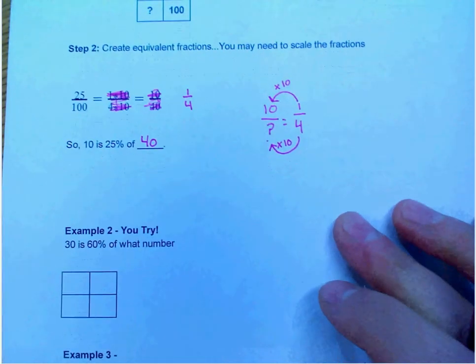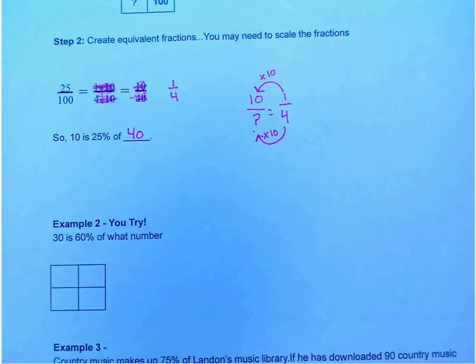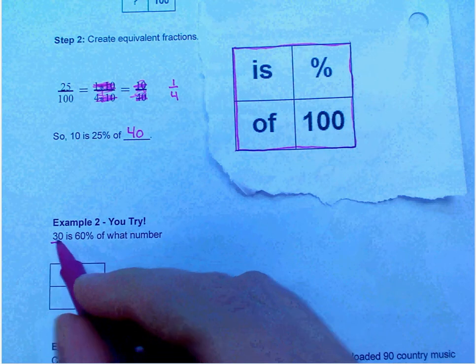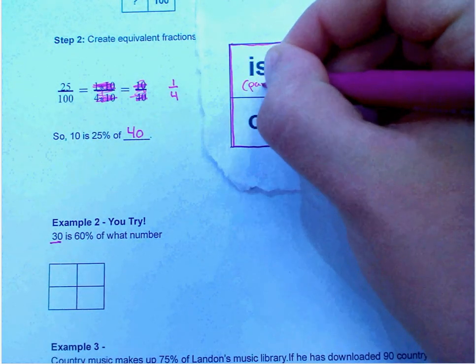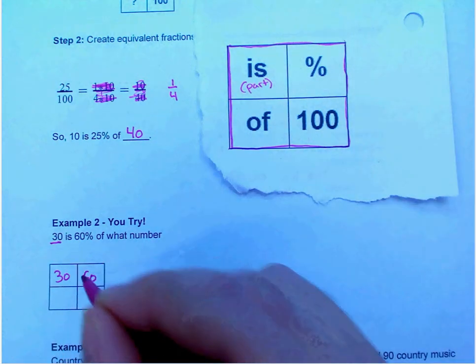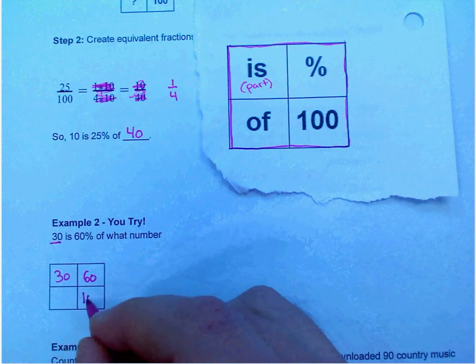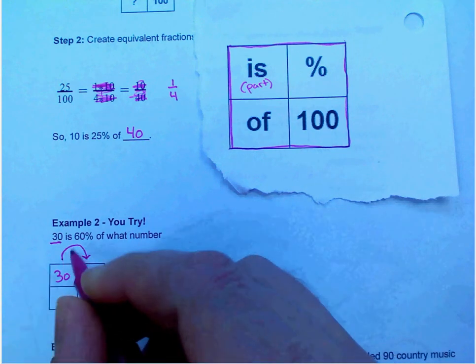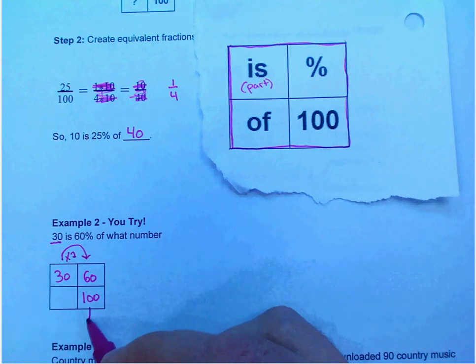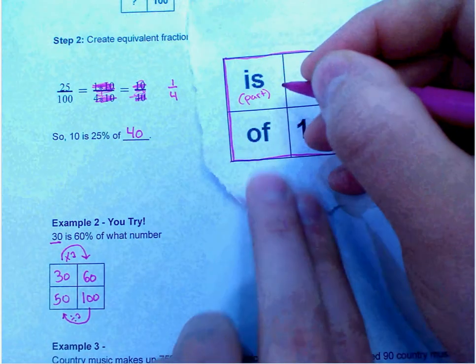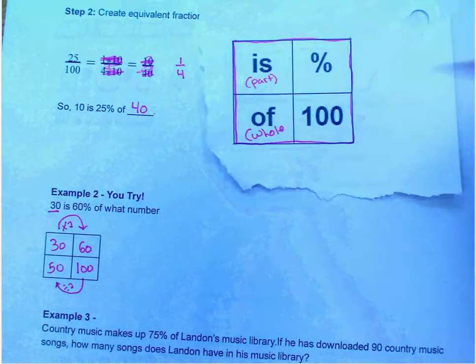I might have gone through that too fast. So we're going to try example two together. So is of percent of 100. So I'm actually taking a look and tearing this little box so that we can get it in here again. So 30 is, so that's our is, that's my part. 30 is 60 percent of what number? This box is always going to be 100. So we're making equivalent fractions. How do I go from 30 to 60? So if I go 30 times 2 is 60, in order to go from here to here, I have to divide by 2 to get what? 100 divided by 2 is 50. That's my whole.